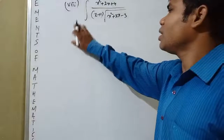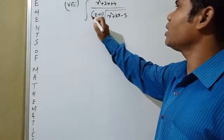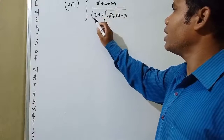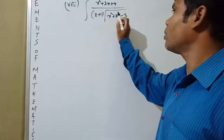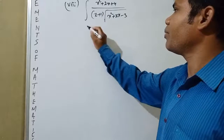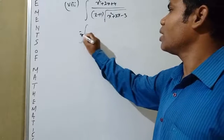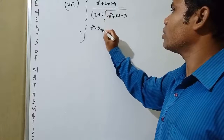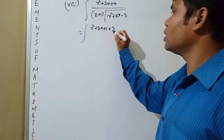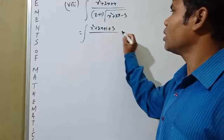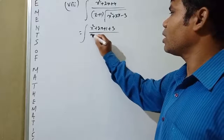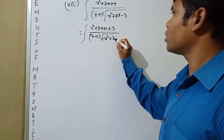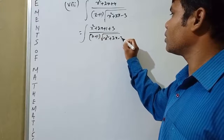The next problem is: integration of (x²+2x+4) divided by (x+1) times root over (x²+2x-3) dx. We rewrite the numerator x²+2x+4 as x²+2x+1+3, which is (x+1)² + 3, all divided by (x+1) times root over (x²+2x-3).